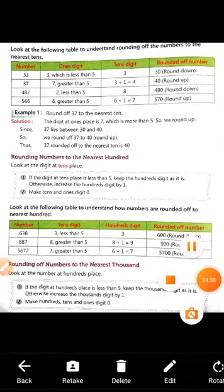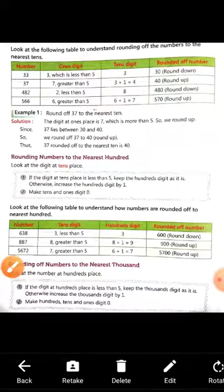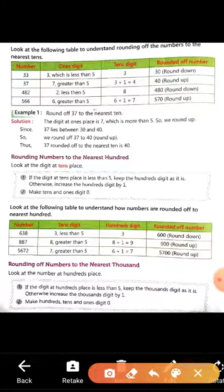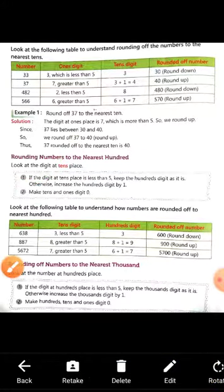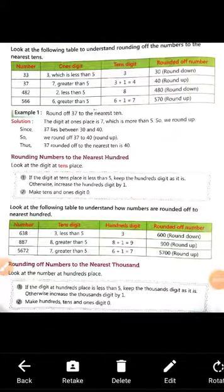Next one is rounding numbers to the nearest hundred. Look at the digit at tens place. There are two formulas, students, kindly note this formula in your notebook. First one: if the digit at tens place is less than 5, keep the hundred digit as it is, otherwise increase the hundred digit by 1. Make tens and ones digit zero.